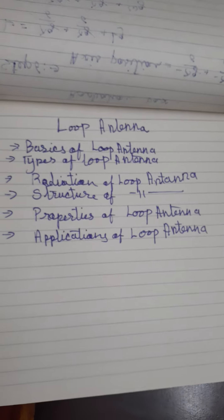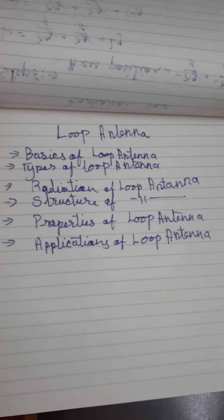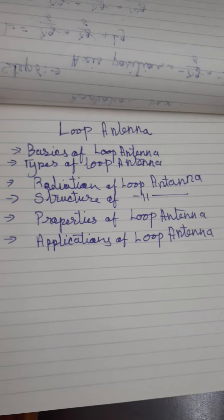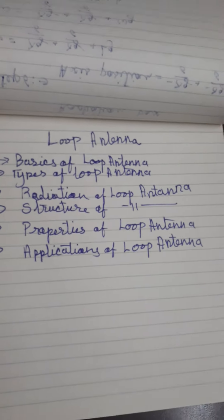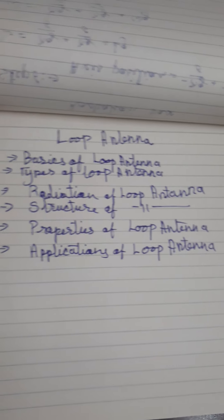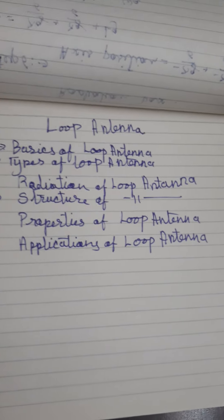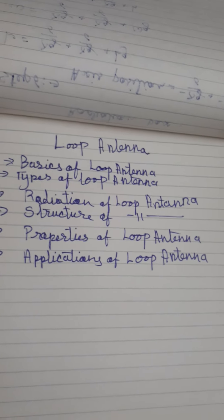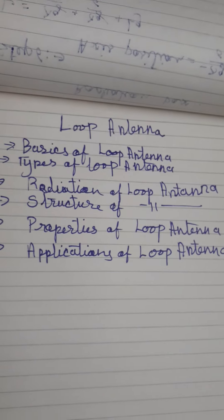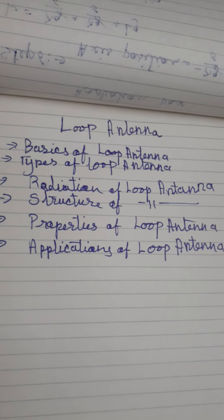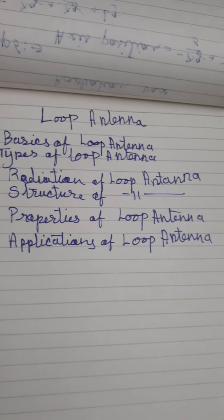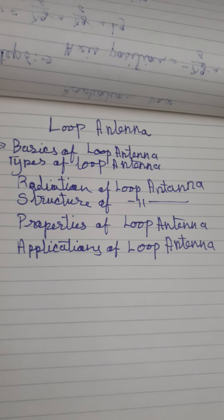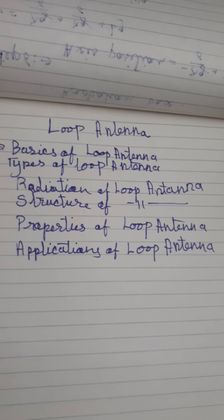Let us begin with the basics of loop antenna. A loop antenna is a simple conductor in a loop. If you take any conductor wire and convert it into any loop shape, that turns into a loop antenna. We need to give some feed to it, and the feed to the loop antenna could be a coaxial cable or any transmission line.